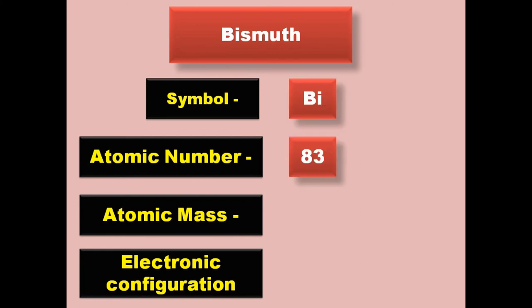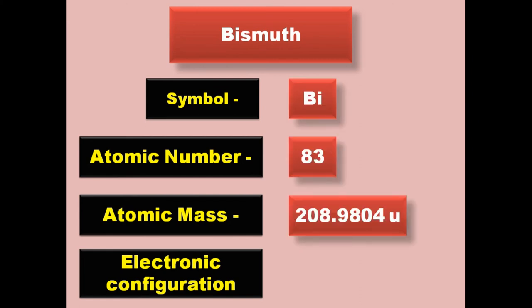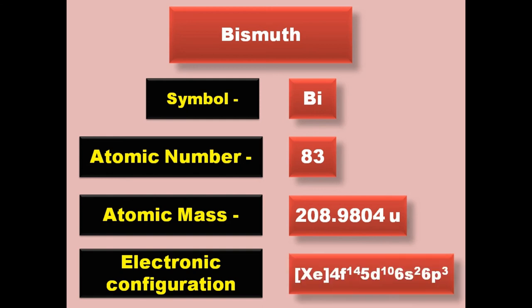Bismuth has symbol Bi, atomic number 83, atomic mass 208.9804, electronic configuration [Xe] 4f14 5d10 6s2 6p3. Bismuth is a post-transition metal and exists in solid form at room temperature.